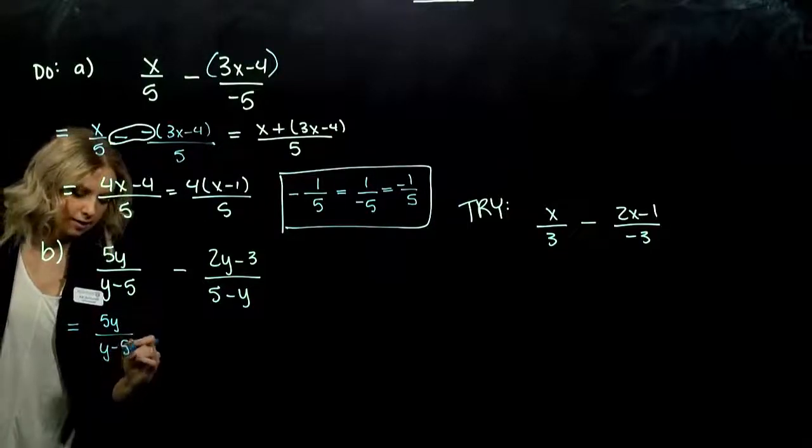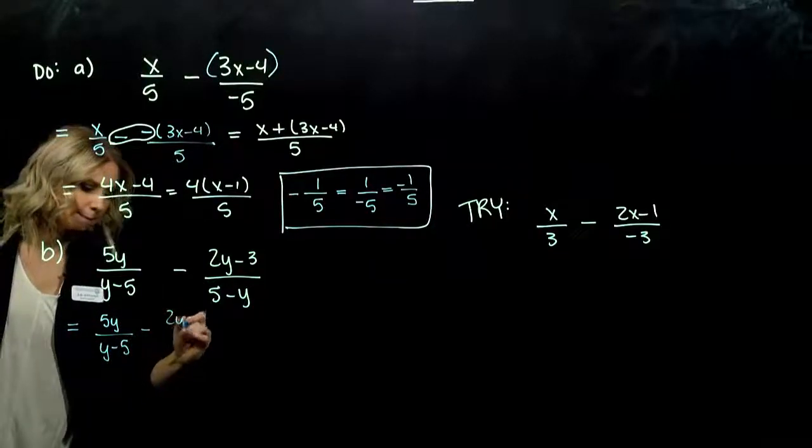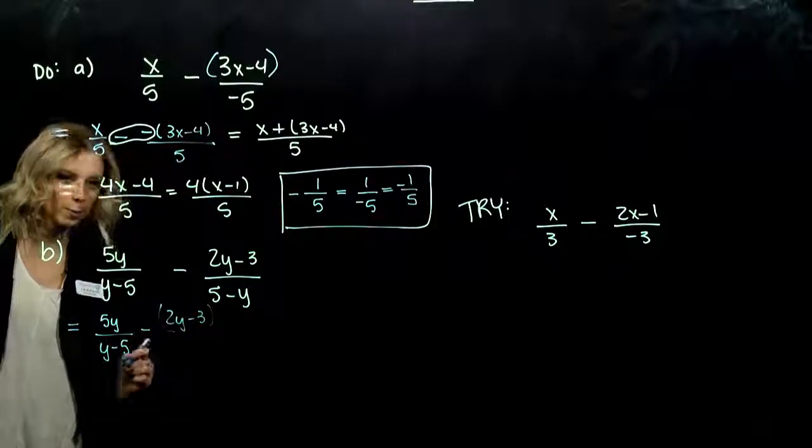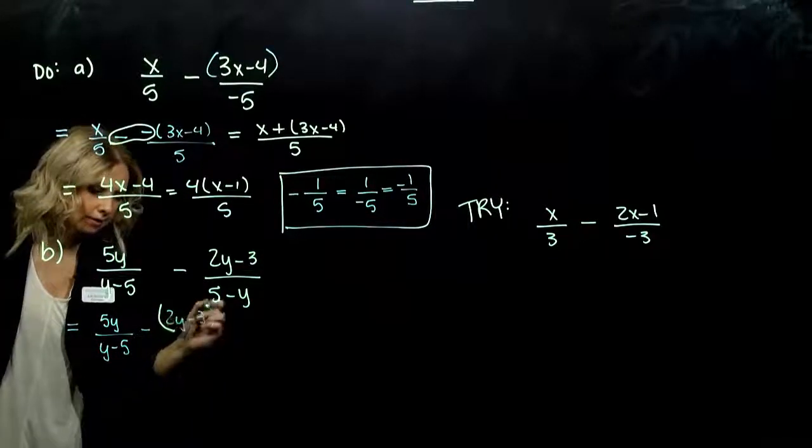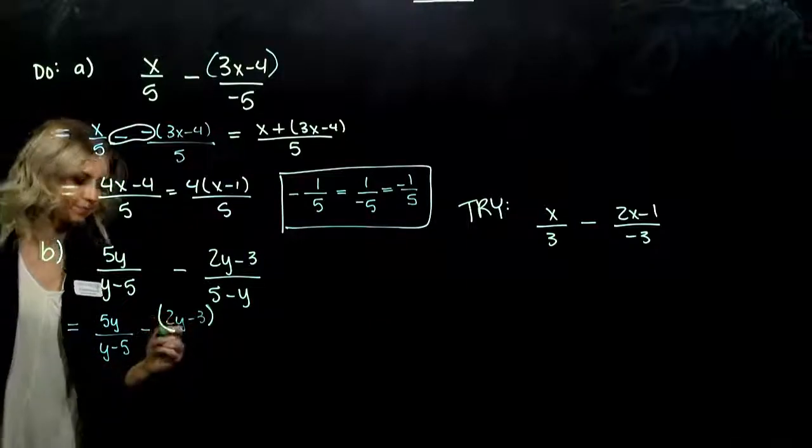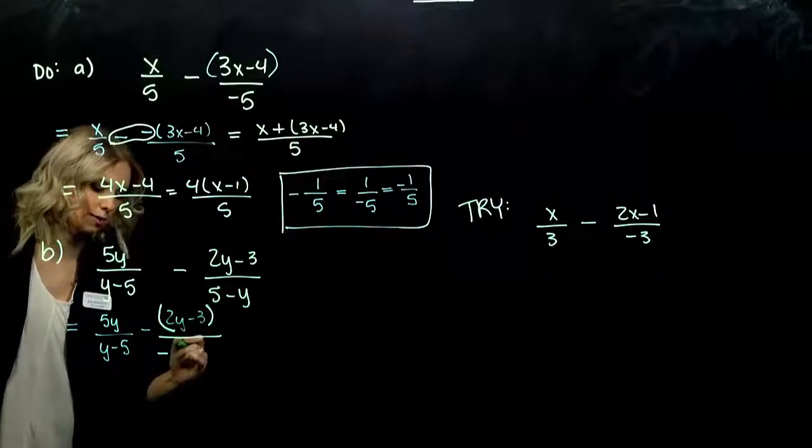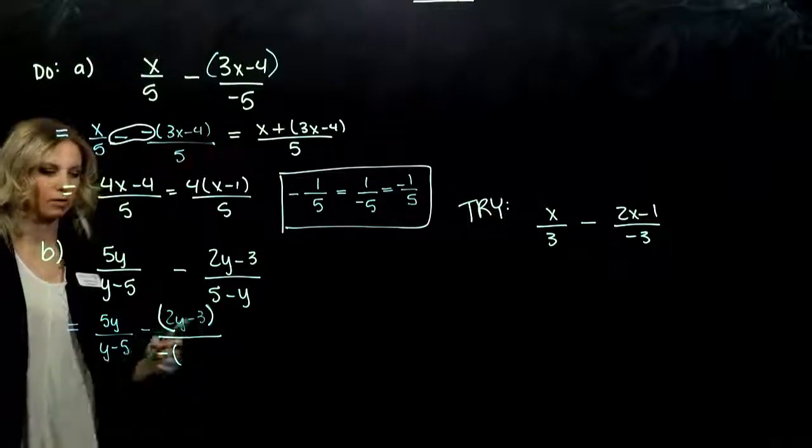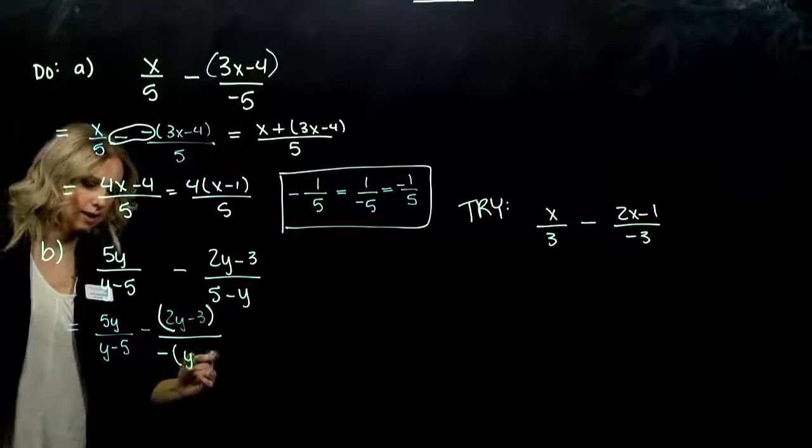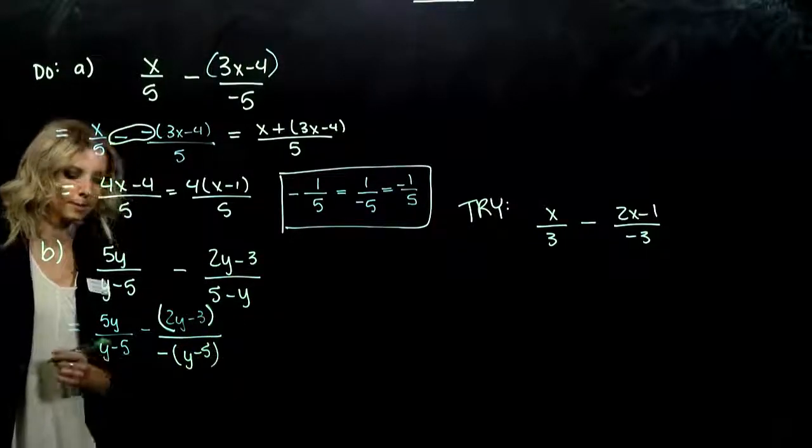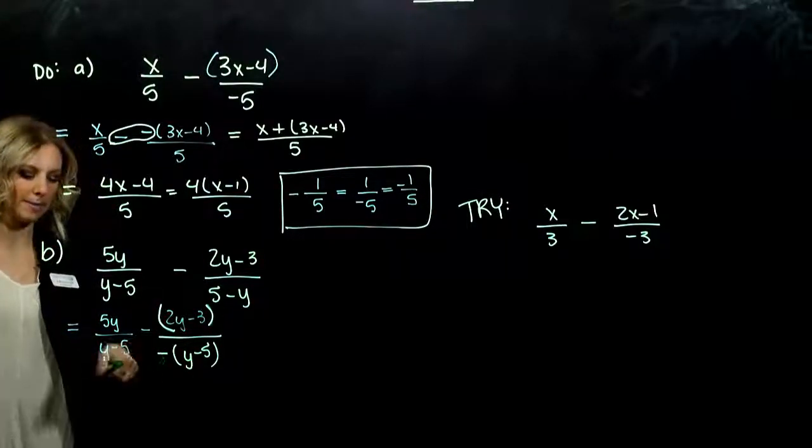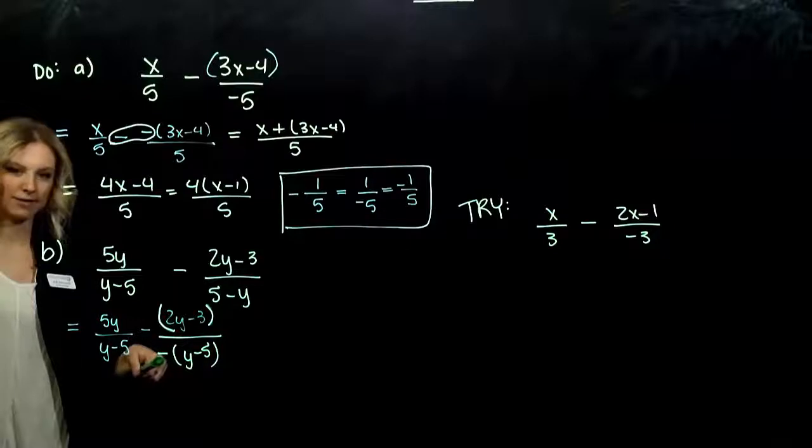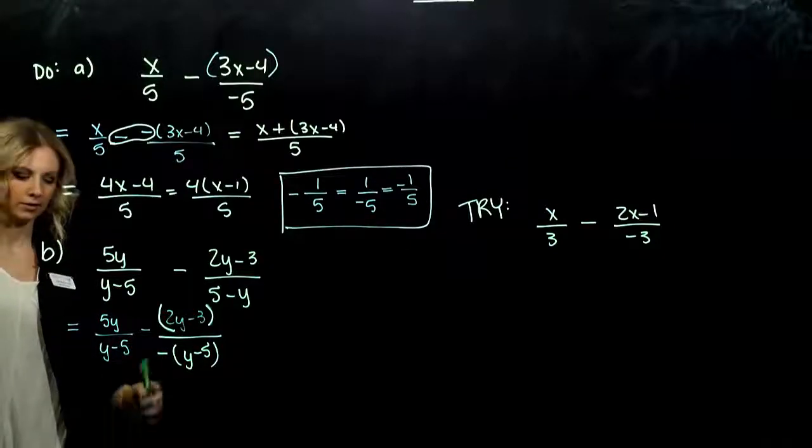What do we get out? Y minus 5. And if I take a negative, grouping together what comes together in the beginning. If I take a negative out of this term, what do I get out? Positive y and negative 5. And now we have that same story of they match exactly, but I have that negative hanging on.